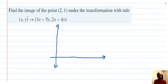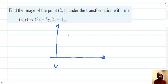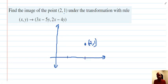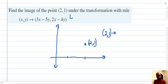First example, find the image of the point (2,1). So we start with (2,1), under the transformation with rule (3x - 5y, 2x - 4y). So we start with (2,1). And we're going to transform the point (2,1). So we basically let x equal 2, and y equal 1 in this case.